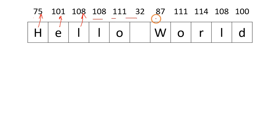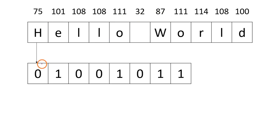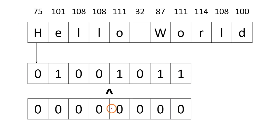If you convert the ASCII value 75 into binary, we get the binary representation of the letter H.